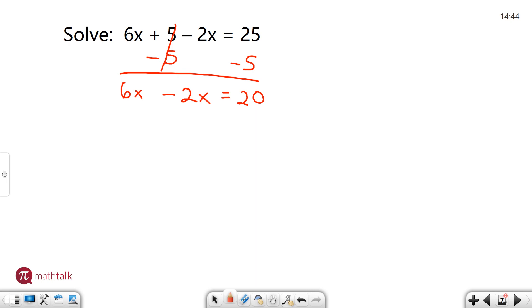Next, I have two values that have the same variable. They're both x's, so I can combine them into one term. The way you combine them is you do whatever the operation says. If I have 6x's minus 2x's that leaves me with 4x's. So I have 4x equals 20.